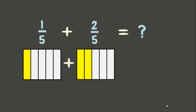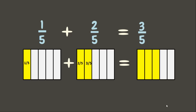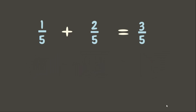Now let's add the two. Let us count the number of parts taken in all. Therefore there are three parts taken out of five equal parts — that makes three out of five, or three-fifths. That was so easy, right?